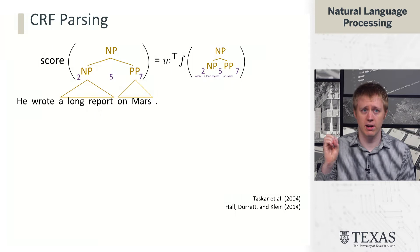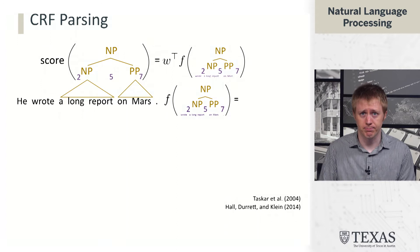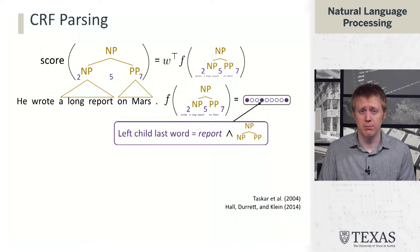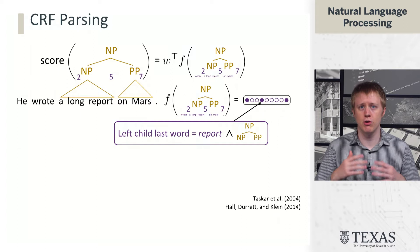To draw an analogy with NER, it was easy to build features that looked at what's two words after a given word. We can do the same thing here, where we can consult the input freely with our features and build a sparse feature vector. Some of these features might say something like: we have a production here where the last word of the left child is the word 'report', and we conjoin that with the fact that we are predicting an NP goes to NP PP rule.